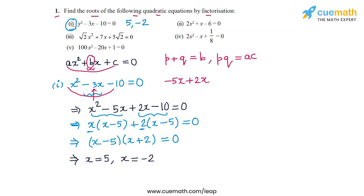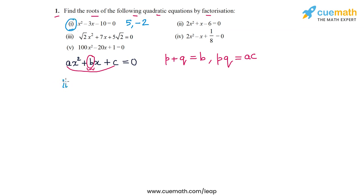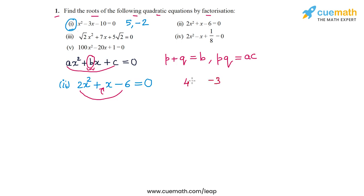Now let's do part 2. The equation is 2x² + x - 6 = 0. To split the middle term, we have to find two numbers whose sum is 1 (the coefficient of x) and whose product is 2 × (-6) = -12. Those two numbers are 4 and -3. So we split the middle term x as 4x - 3x, giving us 2x² + 4x - 3x - 6 = 0.